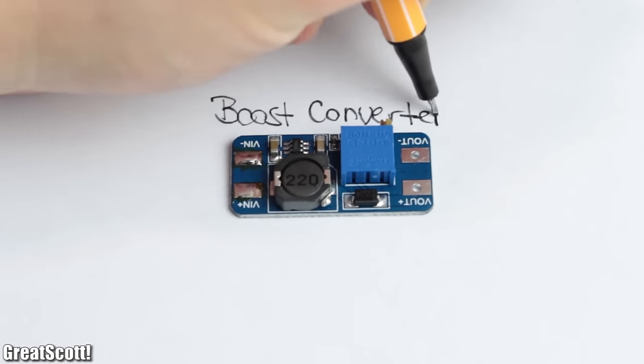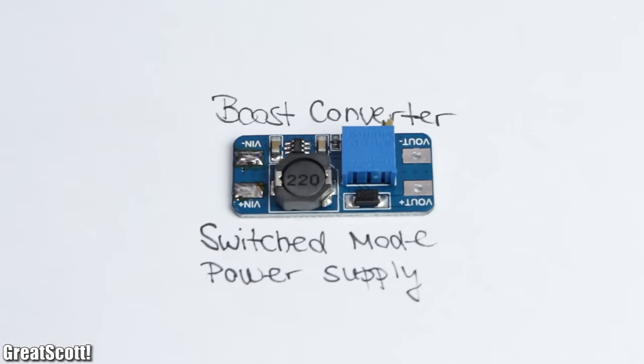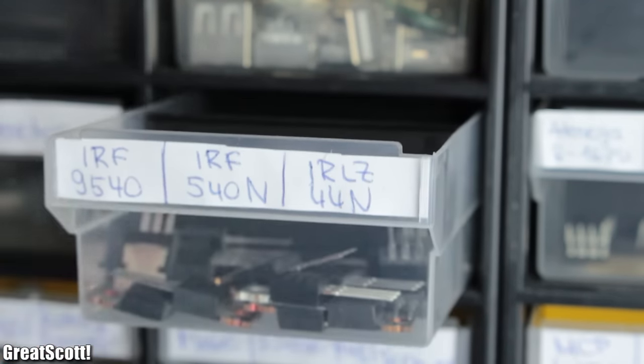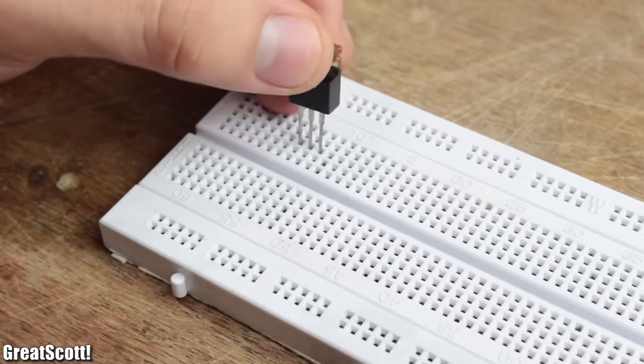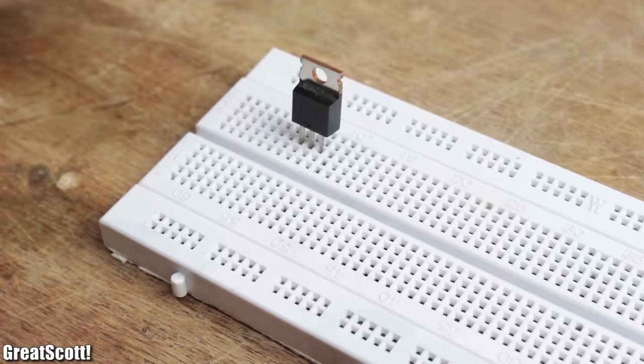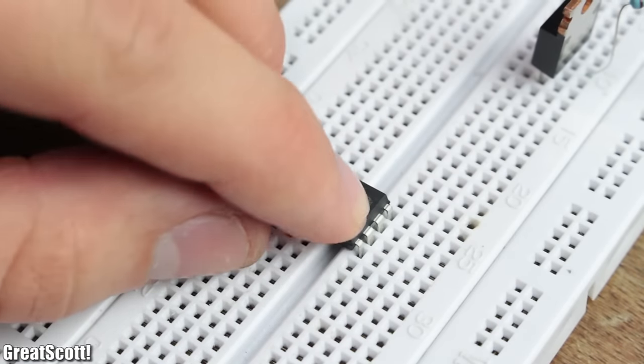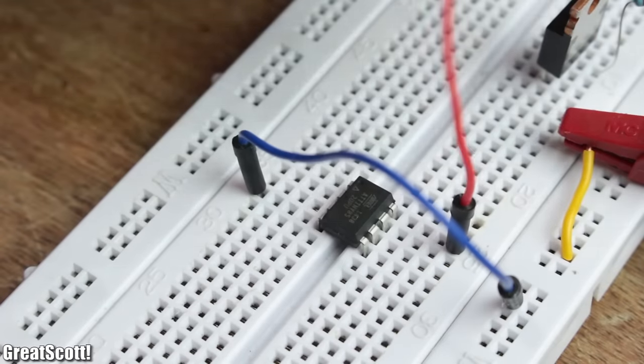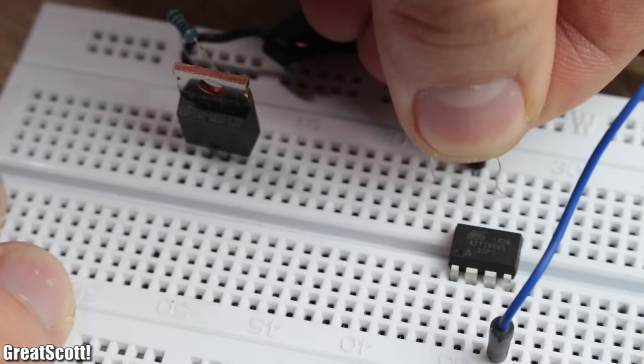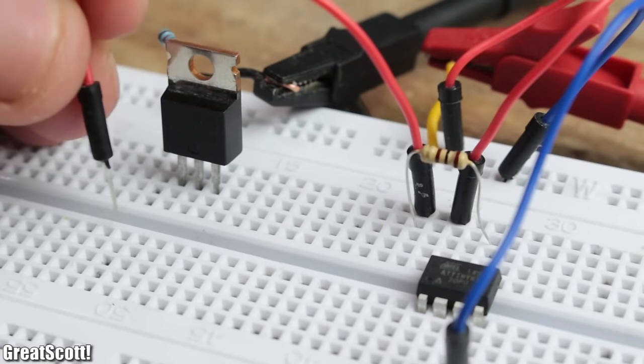Since the boost converter is a switched mode power supply, we need a powerful switch. I went with an IRLZ44N N-channel MOSFET with a pull-down resistor on the gate. To control it, I use PWM pin 1 of an ATtiny85 that connects to the gate through a 100 ohm resistor.